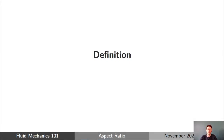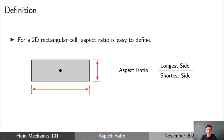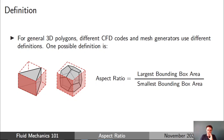Let's start with a simple definition of aspect ratio. For a 2D square or rectangular cell, the aspect ratio is easy to define — it's just the ratio of the longest side of the rectangle to the shortest side. For more complex shapes like triangles, polygons, or 3D shapes, the aspect ratio is more difficult to define, and in general there are many different ways you could define it. Different CFD codes and mesh generators use different definitions.